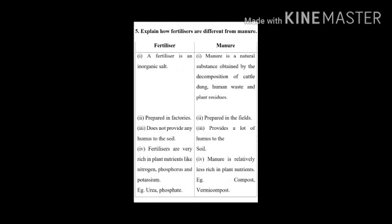Fifth question: explain how fertilizers are different from manure. Divide the column into two with headings — Fertilizer and Manure. In the fertilizer column: first, a fertilizer is an inorganic salt; second, prepared in factories; third, does not provide any humus to the soil; fourth, fertilizers are very rich in plant nutrients like nitrogen, phosphorus, and potassium. Examples: urea, phosphate.